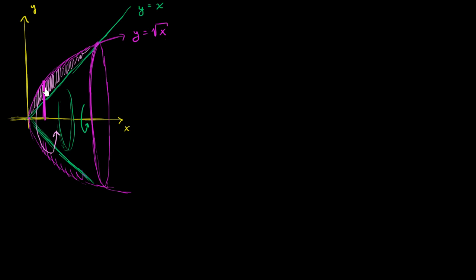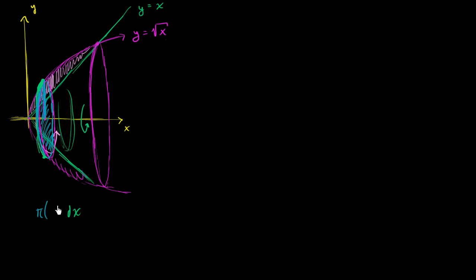At any given point, our radius for one of our disks is going to be equal to the function. Let's rotate that disk around — this is the face of the disk — and it's going to have a depth of dx. The volume of this disk is going to be our depth dx times the area of the face, which is pi times the radius squared. The radius is going to be equal to the value of the outer function, square root of x, so it's pi times square root of x squared.